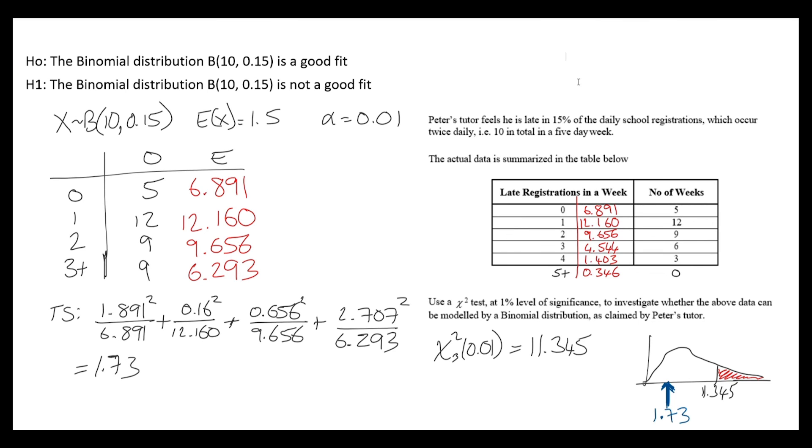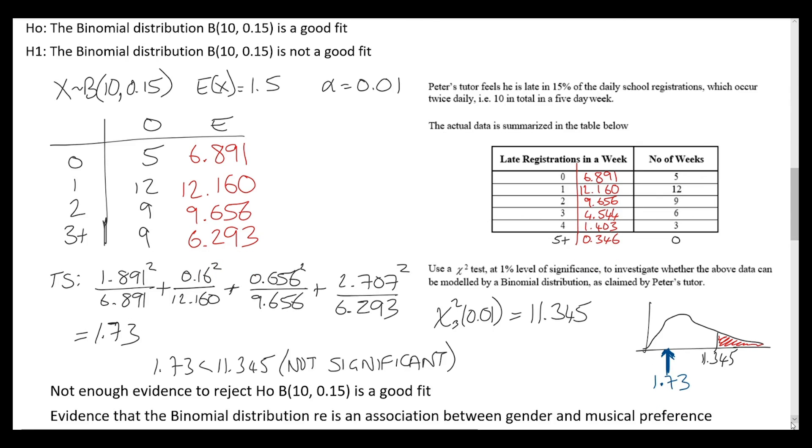Not a significant result. Let's formalize that. 1.73 is less than 11.345. This is not significant. And then our final conclusion: there's not enough evidence to reject H0, and this binomial distribution is a good fit.